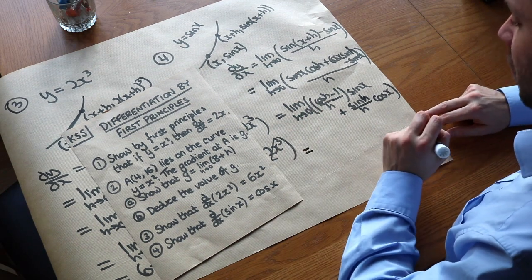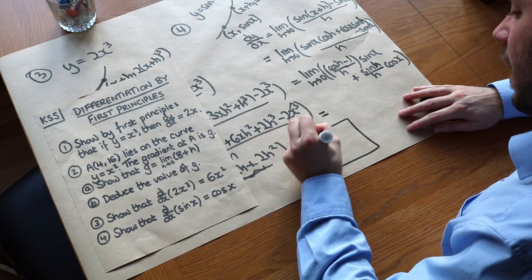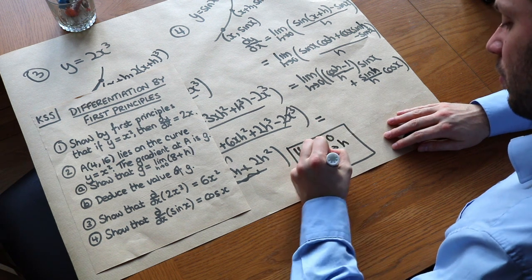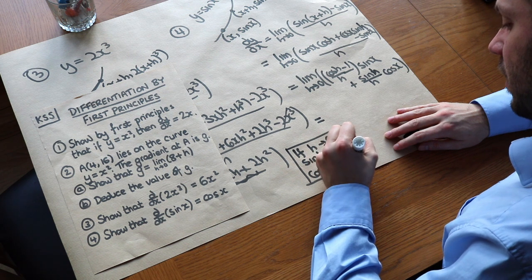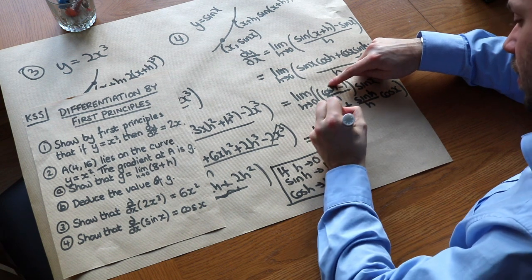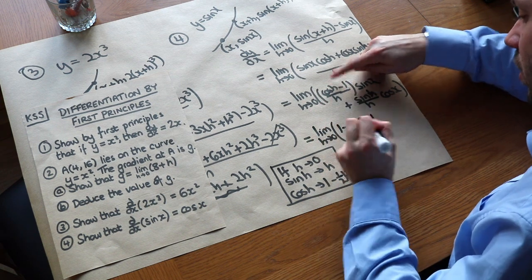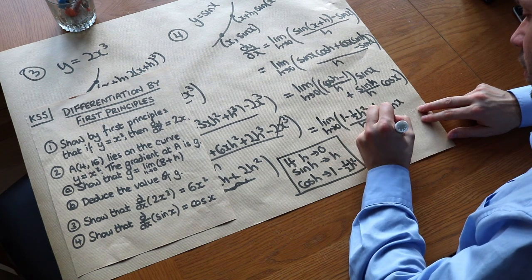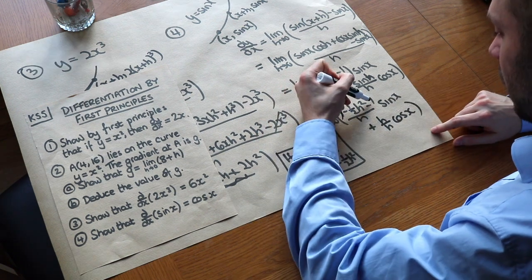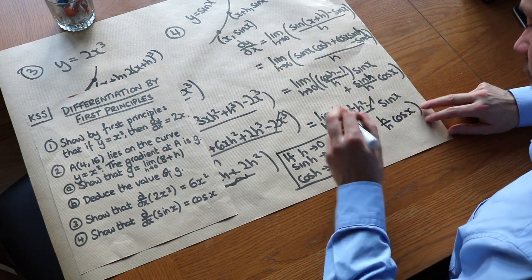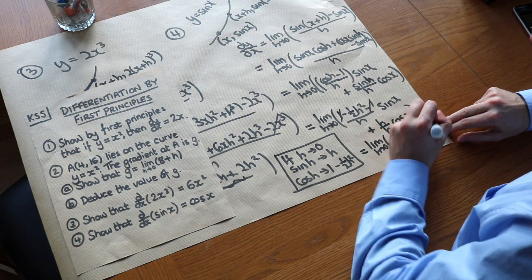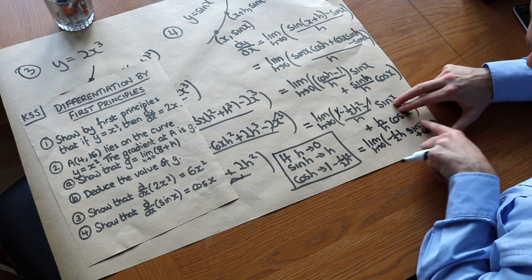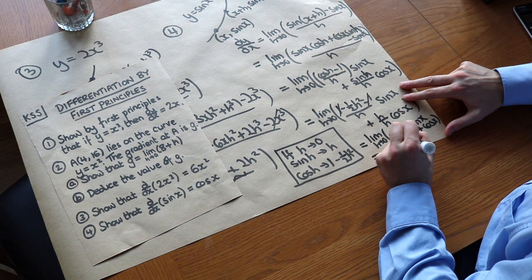We use small angle approximations here. When h tends towards 0 and the angle is really small, sin h is approximately equal to h and cos h is approximately equal to 1 minus half h squared. Substituting in: (1 minus half h squared minus 1) over h lots of sin x, plus h over h cos x. The 1s cancel, leaving minus half h squared over h which is minus half h, times sin x, plus cos x. As h tends towards 0, that minus half h sin x term goes to 0, and we are left with cos x. And we are done. Thank you very much.